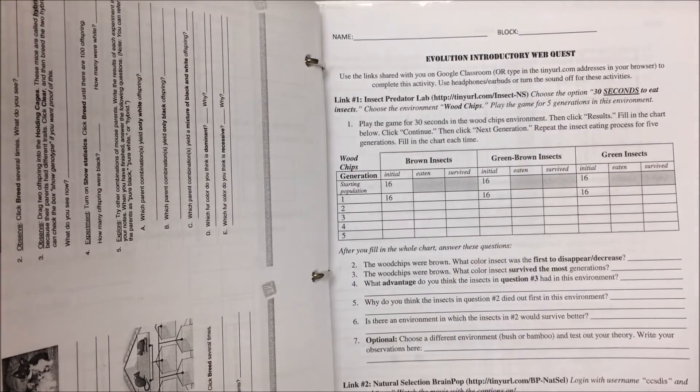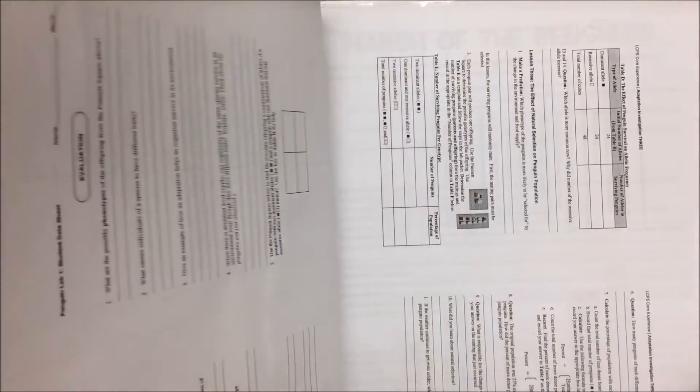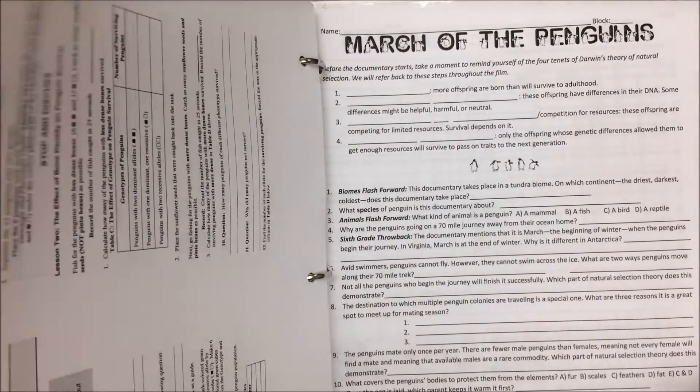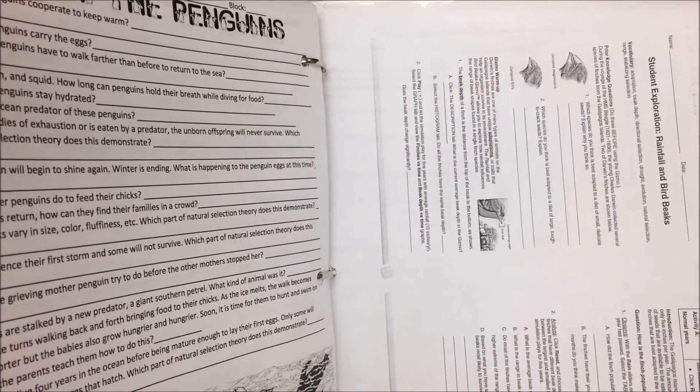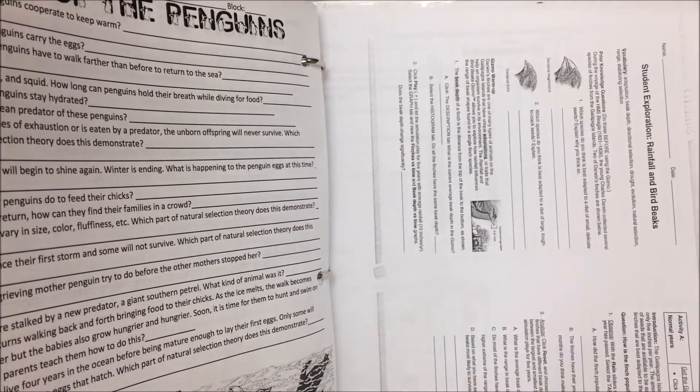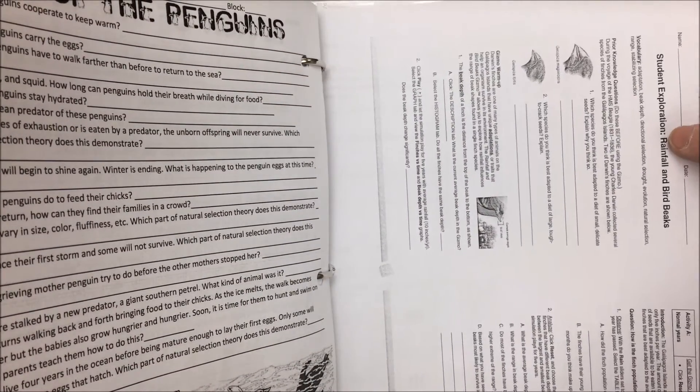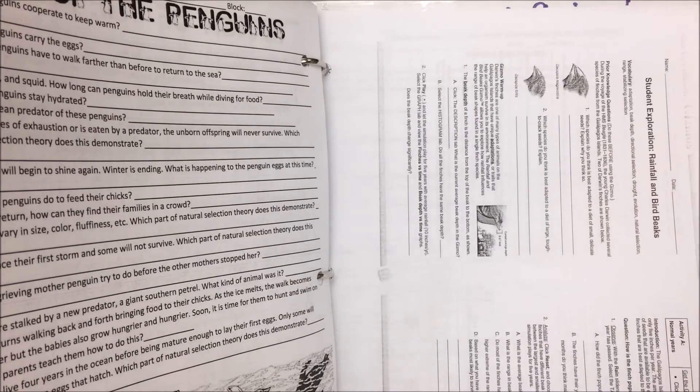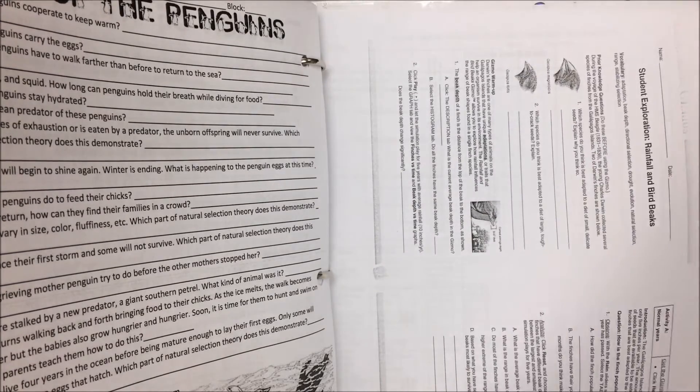In your labs and project section you have your evolution introductory web quest, Penguin Lab 1, Penguin Lab 2 which hopefully you've turned in for summative grades, your March of the Penguins note sheet, and our review lab gizmo activity which was on how rainfall affects the size of bird beaks and how the bird beaks adapt to the fall of rain.